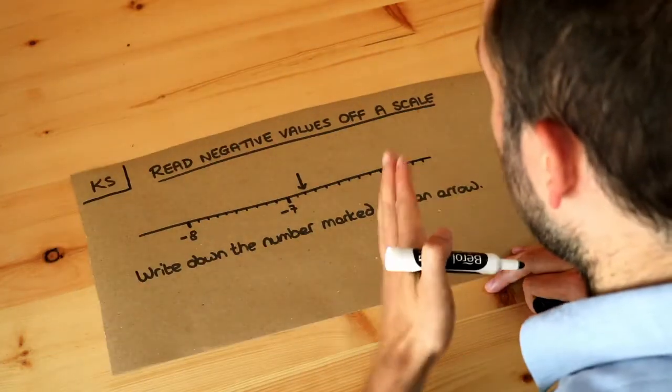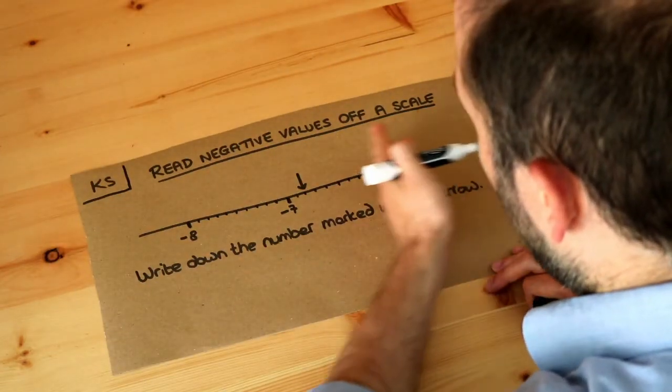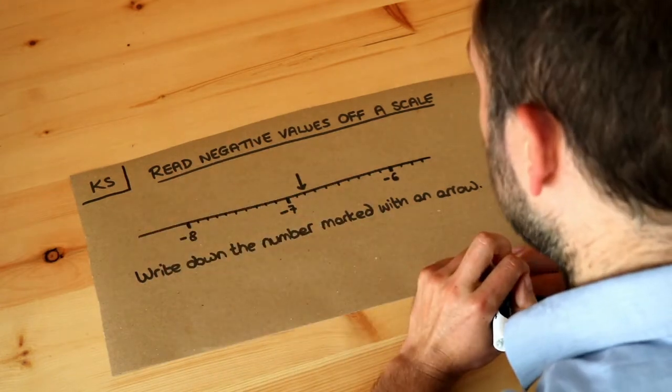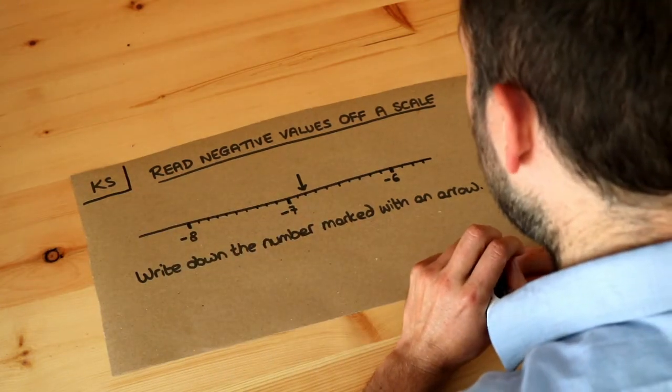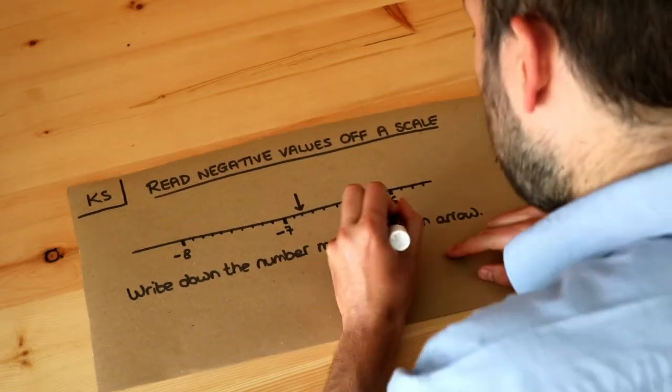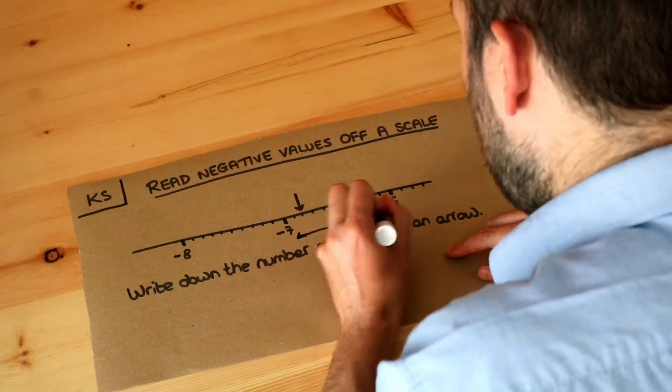Now when you have negative numbers as you go up from like six, seven, eight, nine, ten, the numbers actually go from right to left rather than left to right.